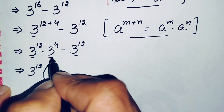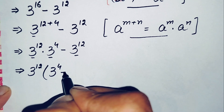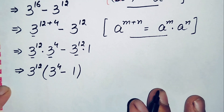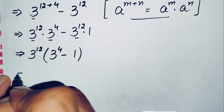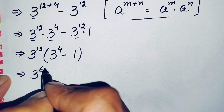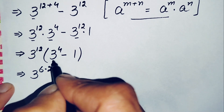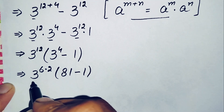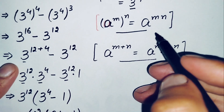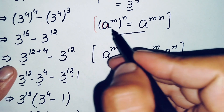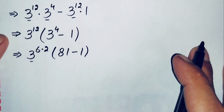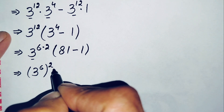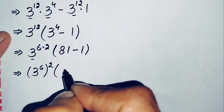After factoring, in the first term 3 raised to power 4 is left, and in the second term only 1 remains. Now we can write 3 raised to power 12 as 3 raised to power 6, all squared, since 12 equals 6 times 2. And 3 raised to power 4 is simply 81, as we found above. So the expression becomes 3 raised to power 6, all raised to power 2, times 81 minus 1.